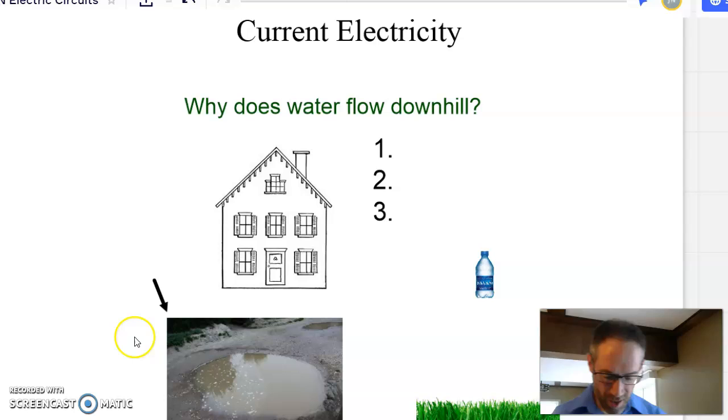You know, I like analogies with gravity in terms of electricity, and I did a lot of those in electrostatics, and I'm going to continue to do them in electric circuits, too. And so I asked, why does water flow downhill?